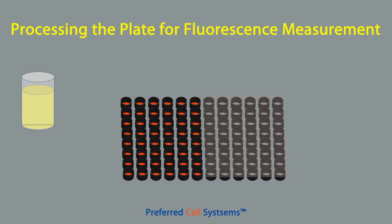The base medium has already been added to the first column — this will be the background. However, if you are using a medium containing serum, this should be used in place of the base medium, since serum contains substances that might produce a fluorescent signal. This background needs to be subtracted from the sample values.